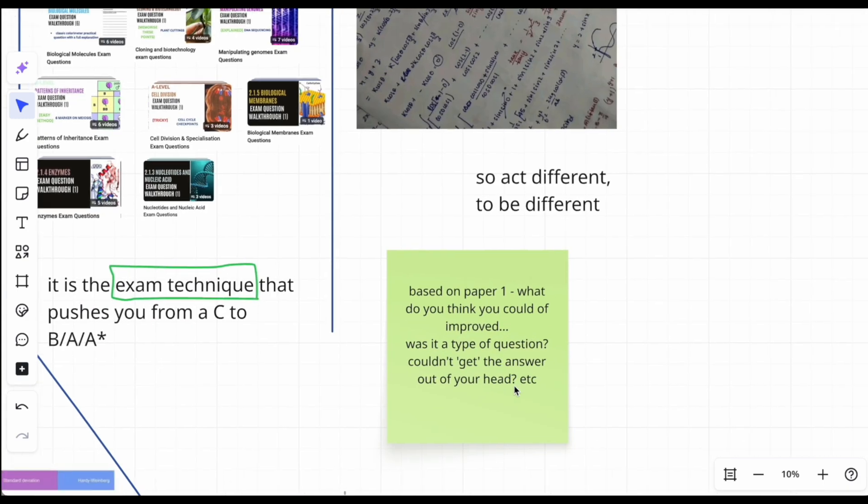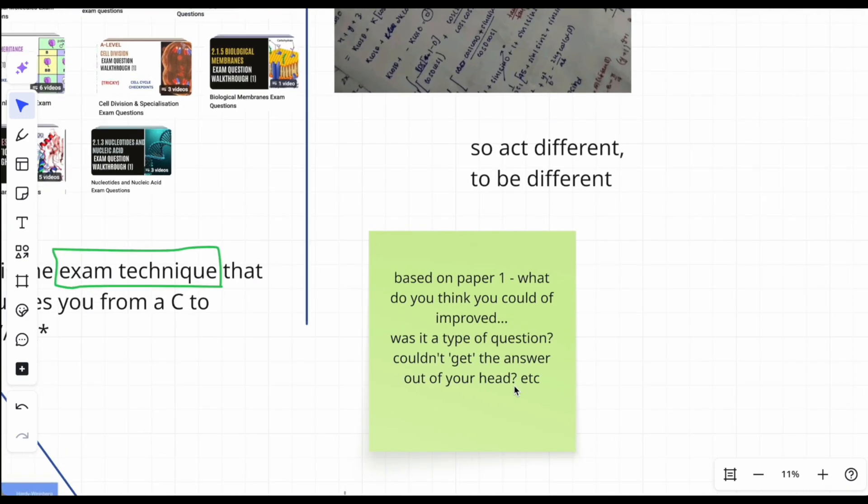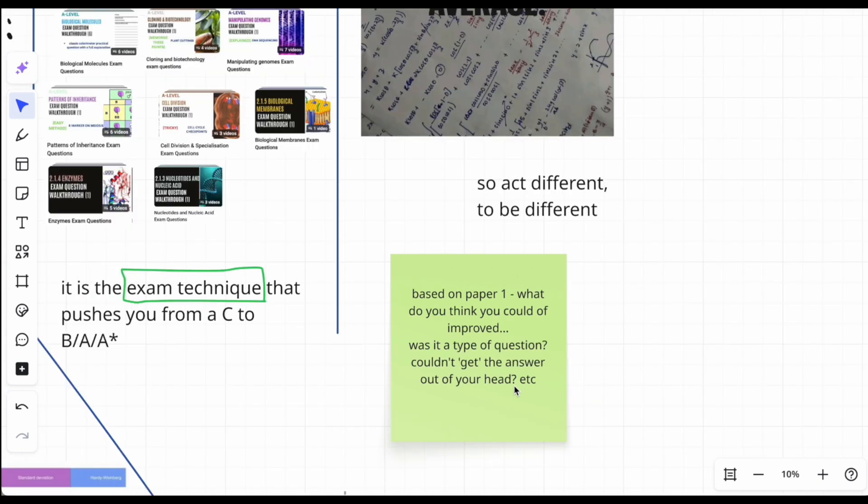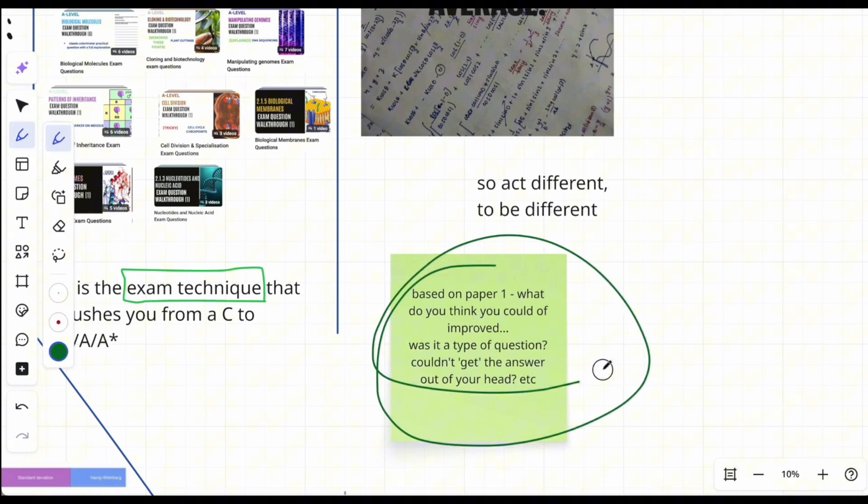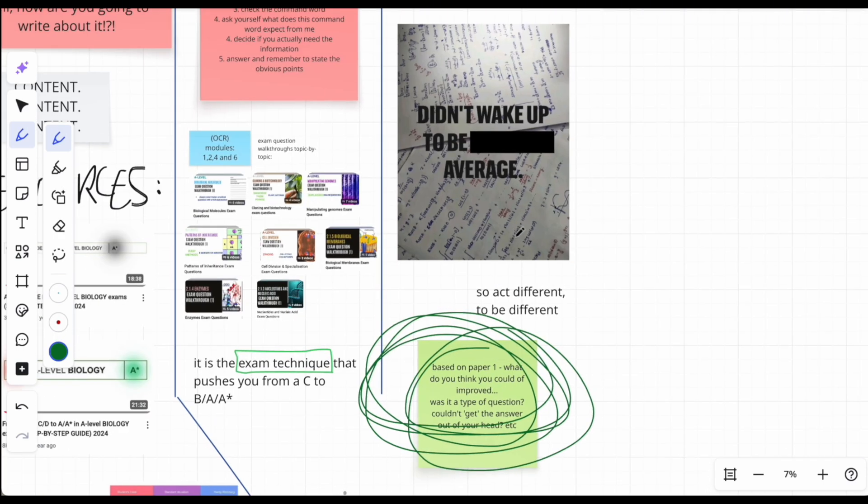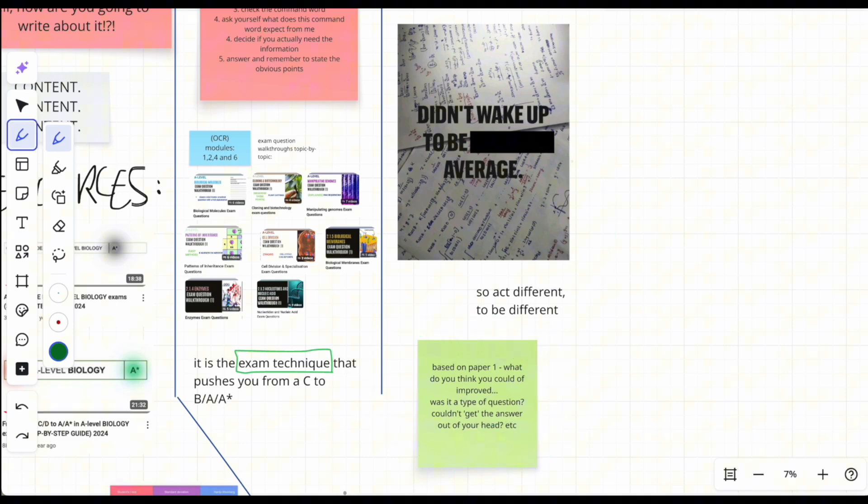You're put in this world, you're put into this position, in this time, in this era for a reason. So to be different you need to act different, and to act different you need to be different. What I really want you to do is just think about paper one, what could you have improved? Was it a type of question and methodology towards it? Was it that you need to practice your analysis application? Was it that you couldn't even write the answer, like you had something in your head but you couldn't articulate it? What was the issue? Target this.